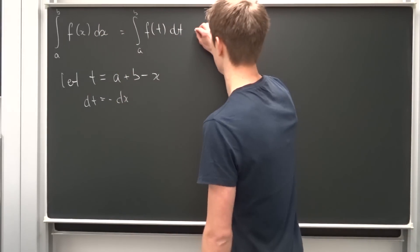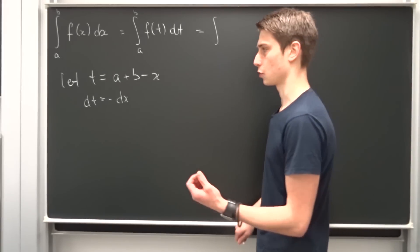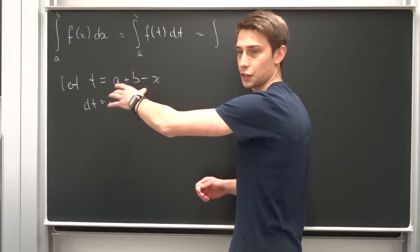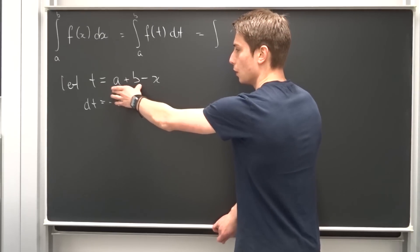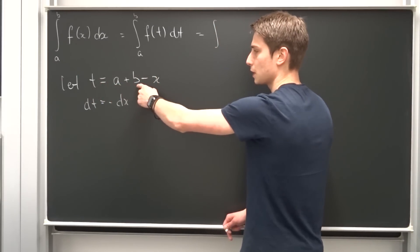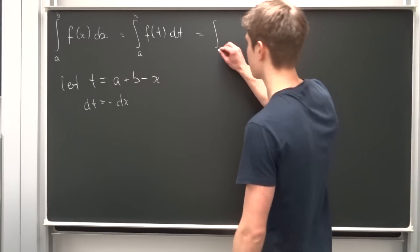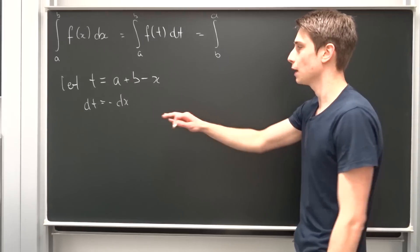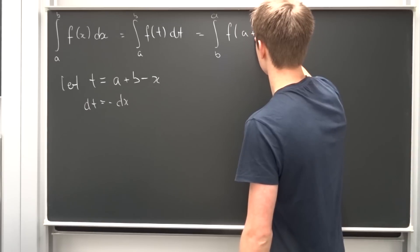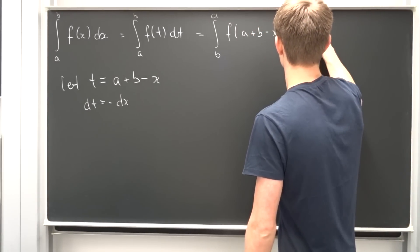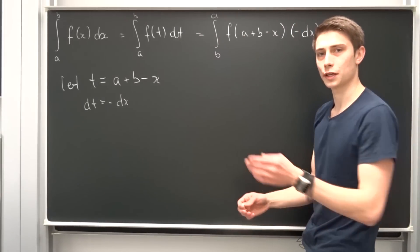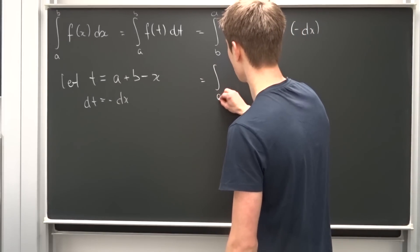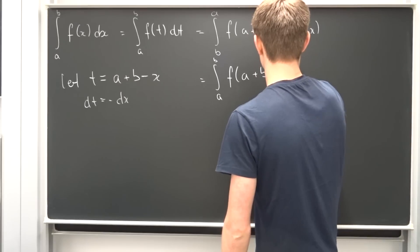Now we can plug this new substitution in to get a new integral. What are our lower and upper bounds? If we plug a into t, our a's cancel and we get b minus x equals 0, so x equals b — meaning b is our lower limit. If we plug b in, by the same process we get a as the upper bound. So now it's the integral of f of a plus b minus x times minus dx.